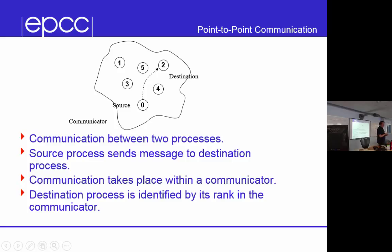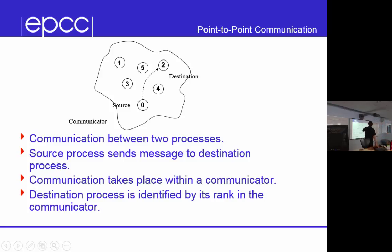We'll look at more communicators later, but for now you know of one: the predefined communicator MPI_COMM_WORLD. If I wanted to split my machine into two groups doing different calculations, I would create two communicators. A message sent within communicator 1 can only be received within communicator 1. For now, we'll just use MPI_COMM_WORLD, which is the predefined communicator that includes everybody. That's why every messaging routine takes a communicator.